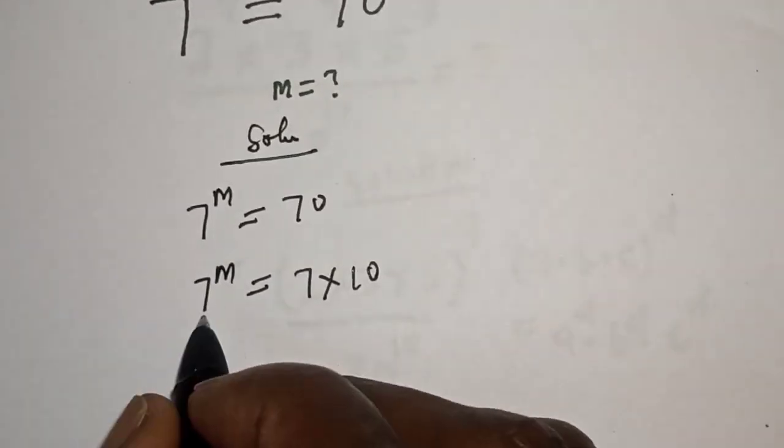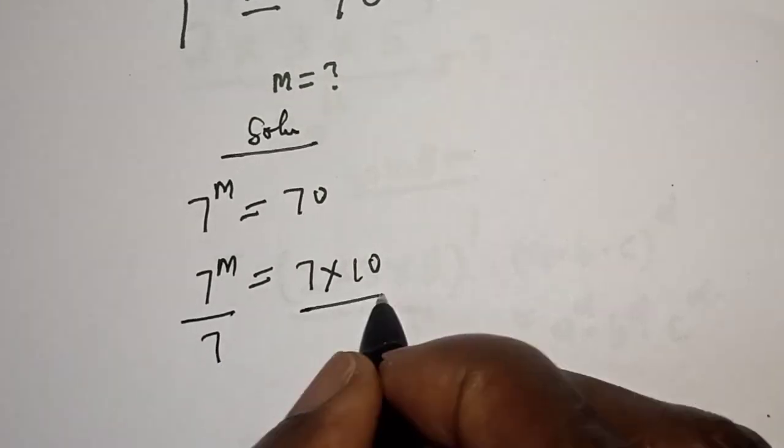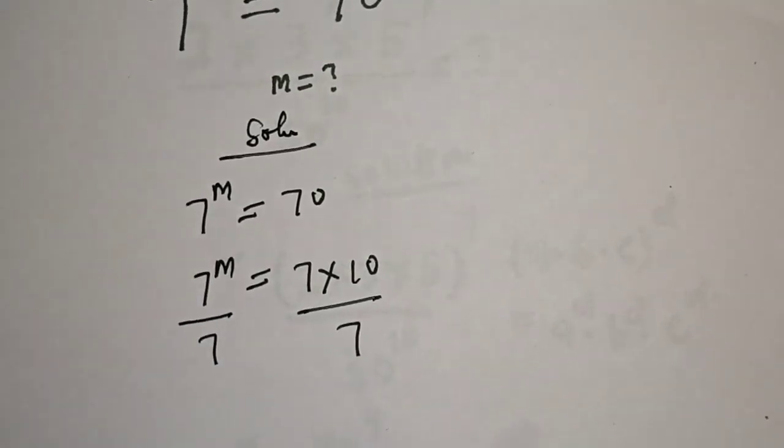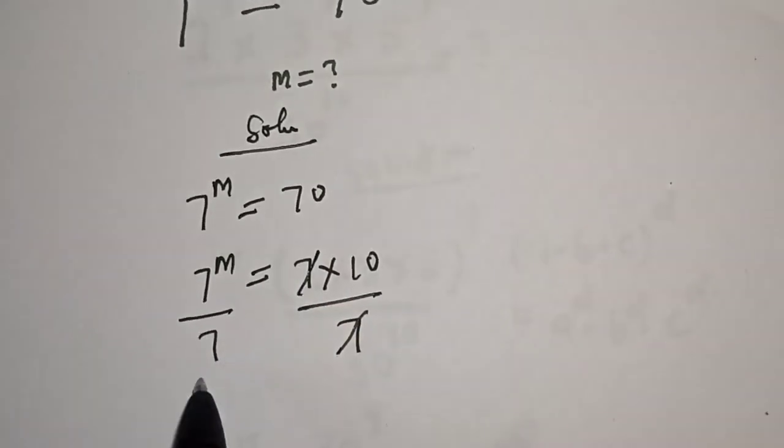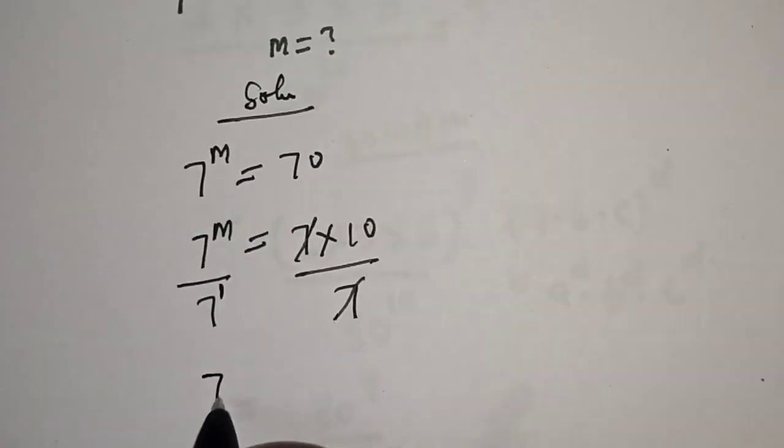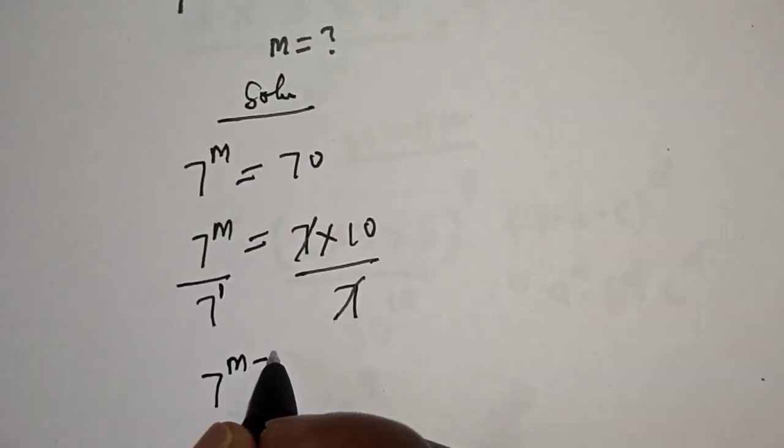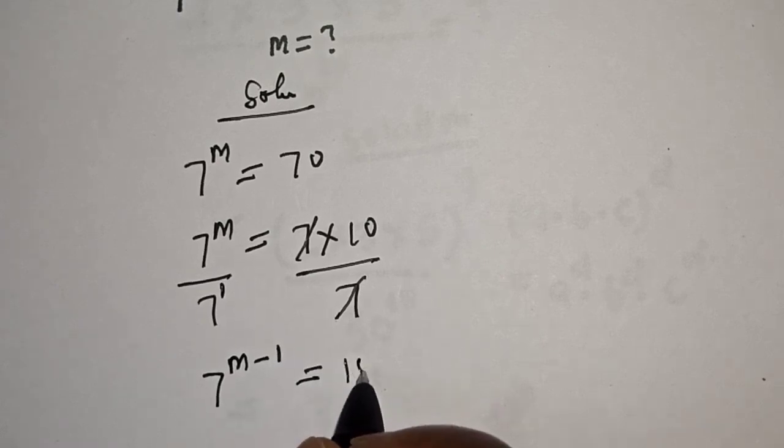Let's divide both sides by 7. This one will cancel this, and this is also raised to power 1. We have 7 raised to power m minus 1 is equal to 10.